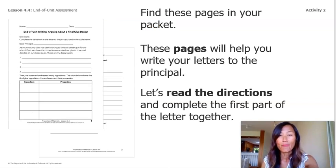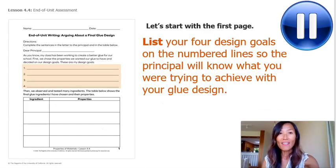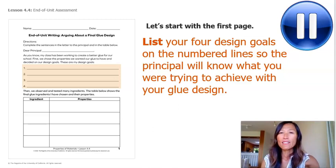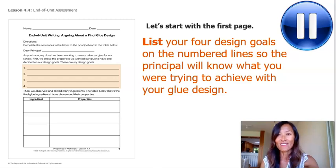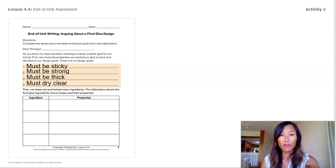Now, find these pages in your packet. These pages will help you write the letters to the principal. Let's read the directions and complete the first part of the letter together. It's titled End of Unit Writing: Arguing About a Final Glue Design. Complete the sentence in the letter to the principal and fill in the table below — list your four design goals so the principal will know what you are trying to achieve. Pause the video now to write your design goals. Here is what you probably wrote: one, must be sticky; two, must be strong; three, must be thick; four, must dry clear.